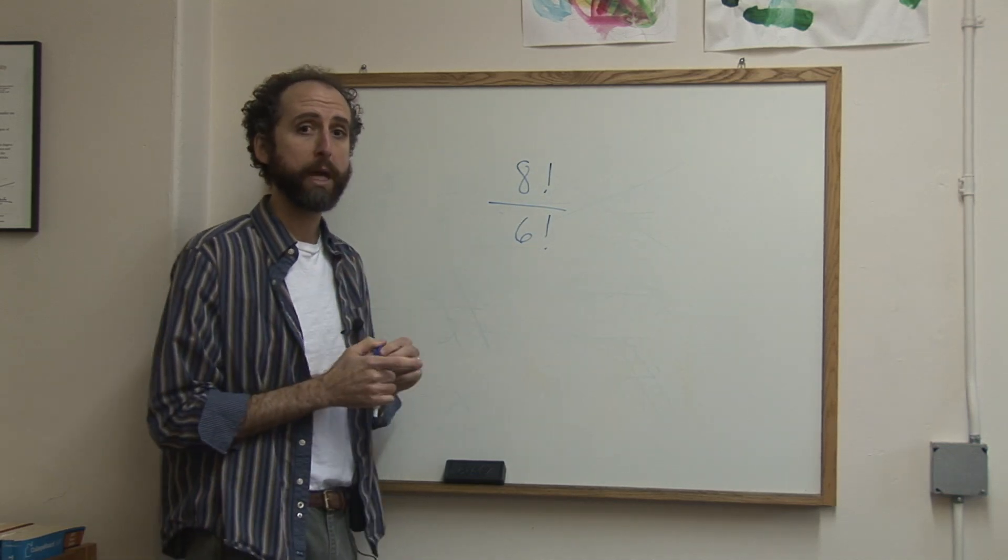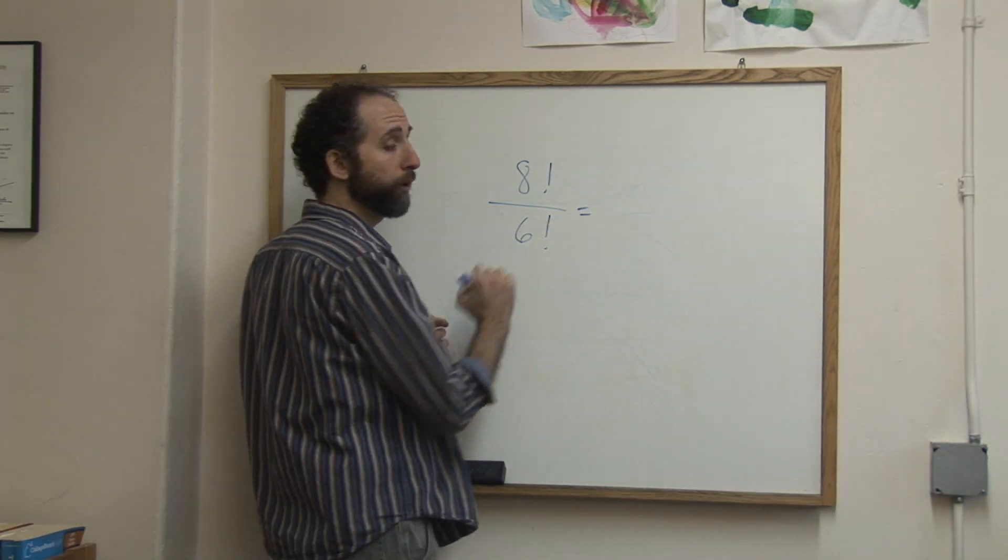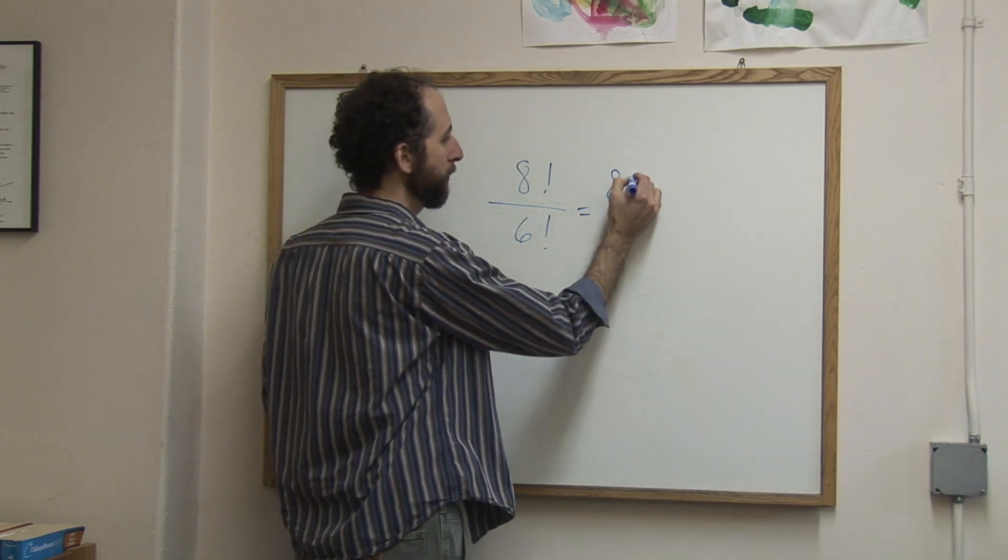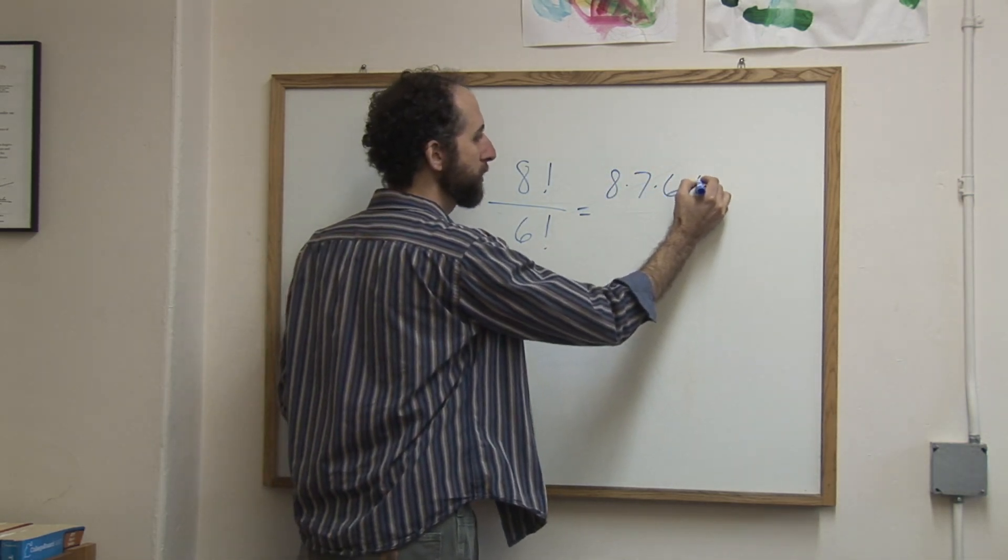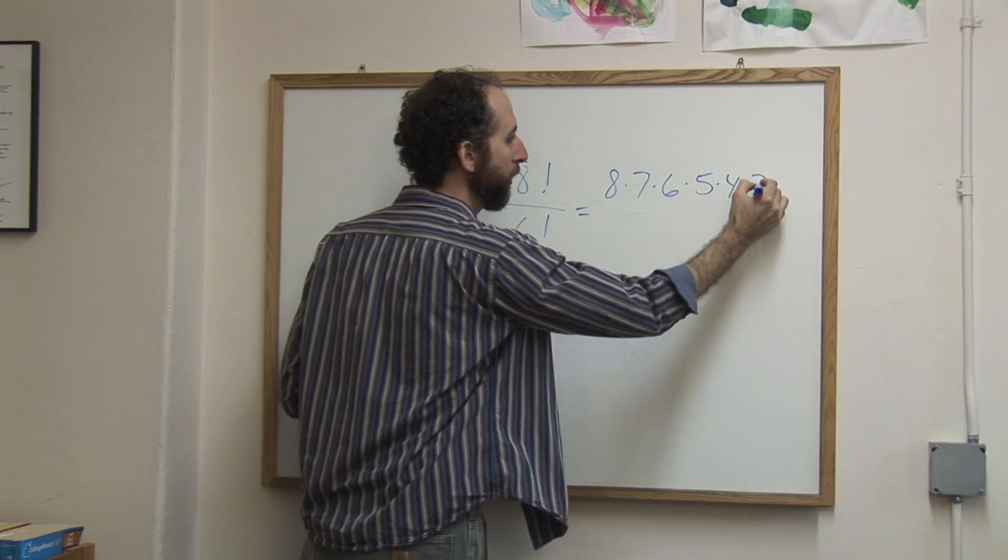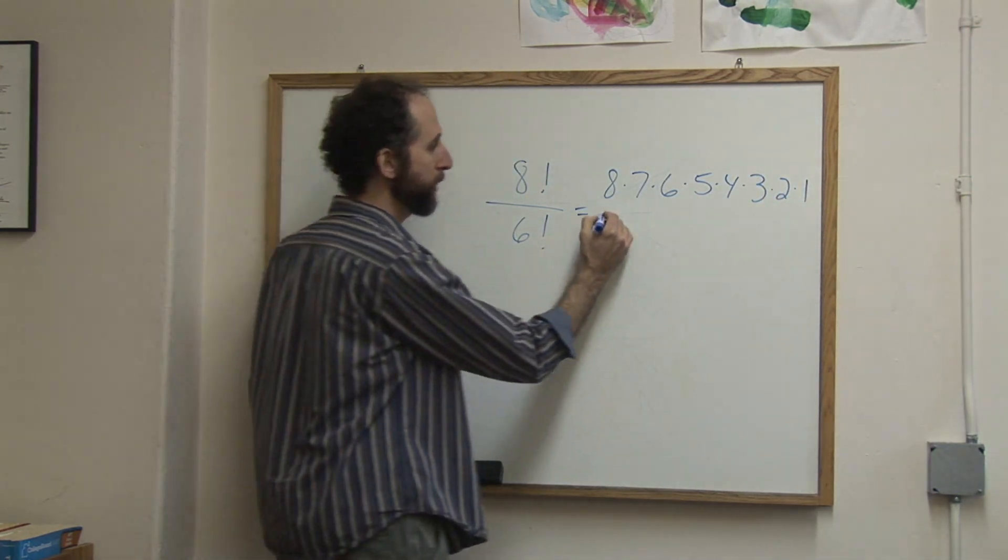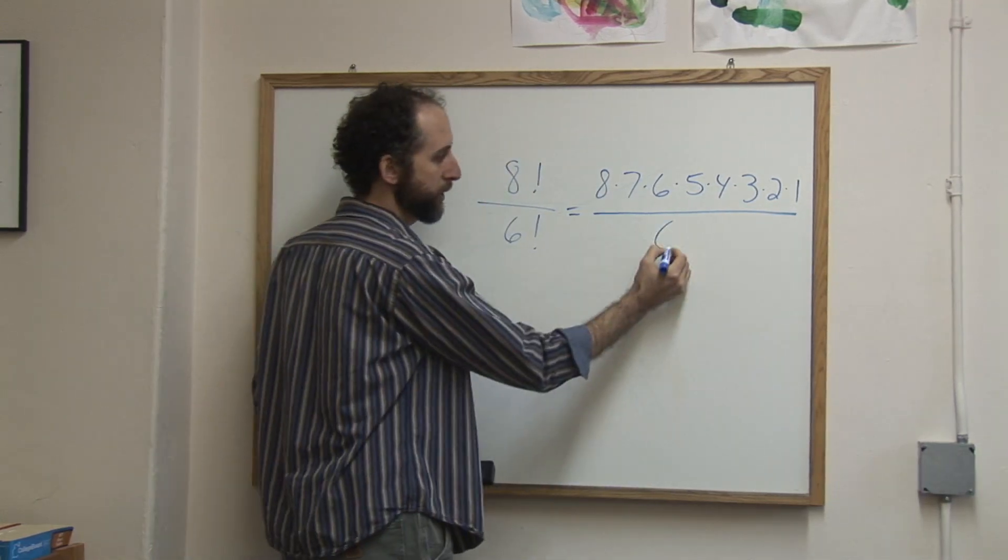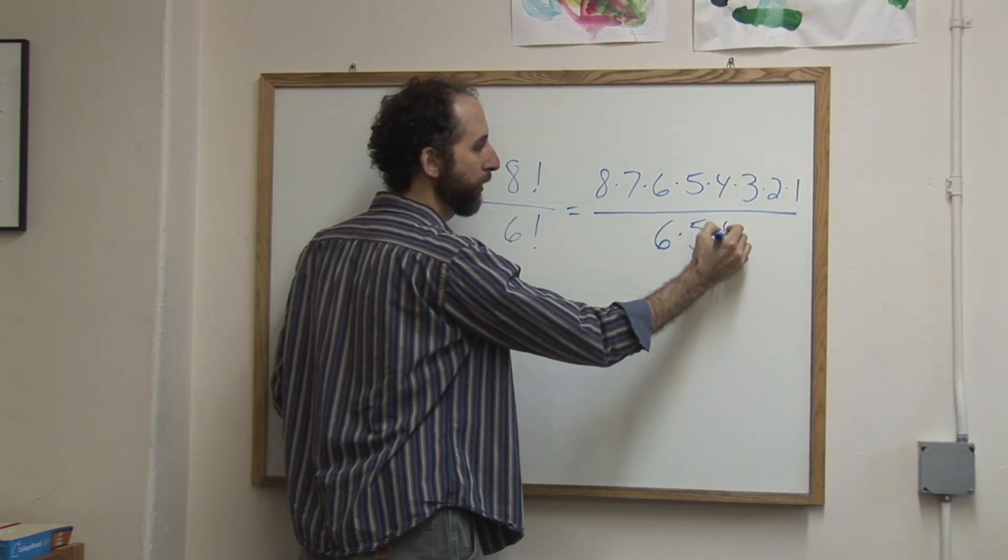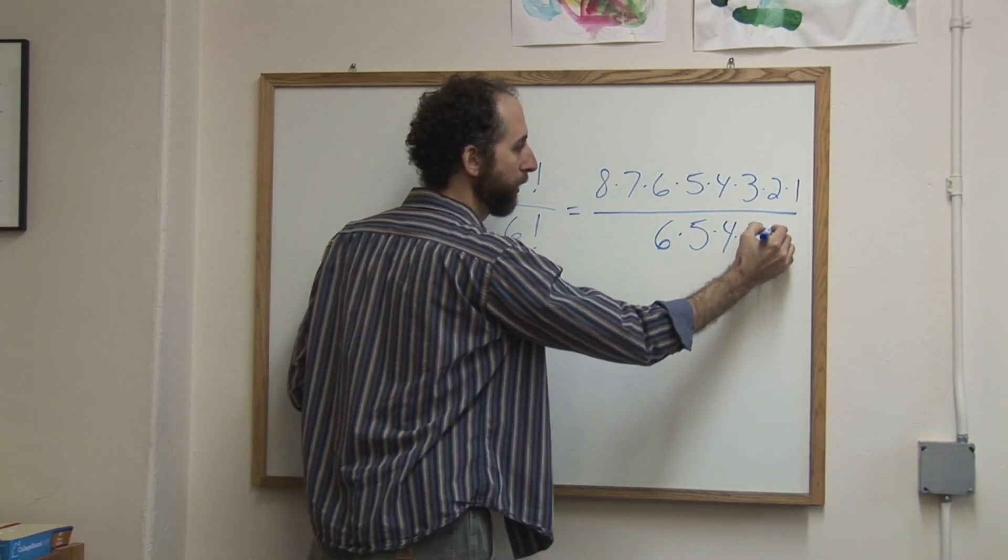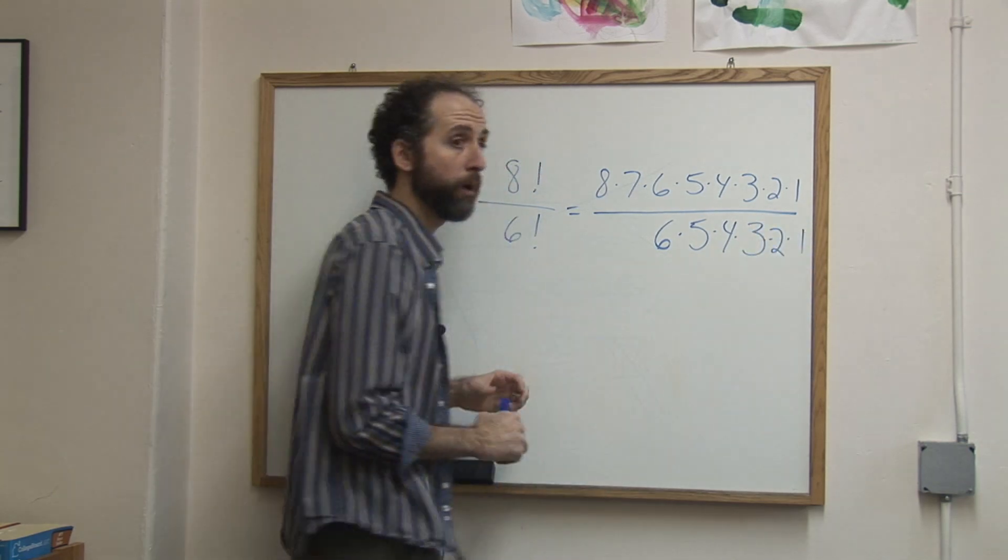There's a part of it that we can reduce out. Because 8 factorial really means 8 times 7 times 6 times 5 times 4 times 3 times 2 times 1. And 6 factorial really means 6 times 5 times 4 times 3 times 2 times 1.